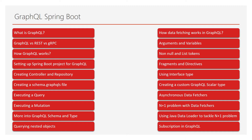Additionally, we'll explore how data fetching works in GraphQL, arguments and variables, non-null and list tokens, fragments and directives, using interface type, creating a custom GraphQL scalar type, asynchronous data fetchers, the N+1 problem with data fetchers, using Java DataLoader to tackle the N+1 problem, and subscription in GraphQL.